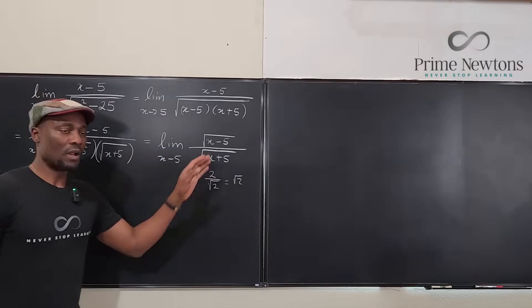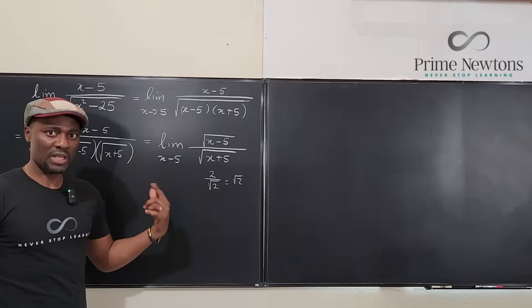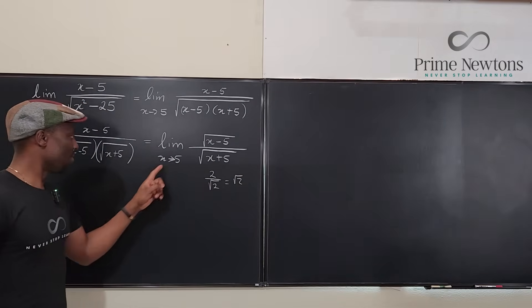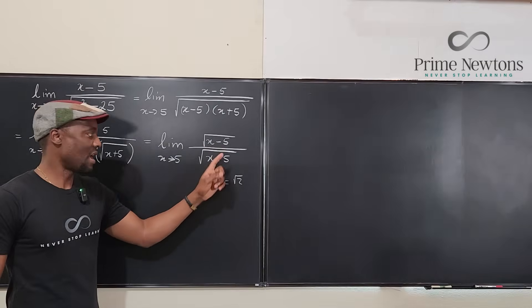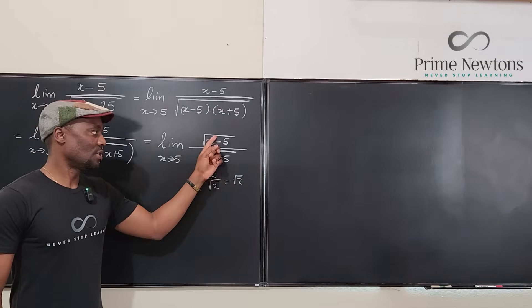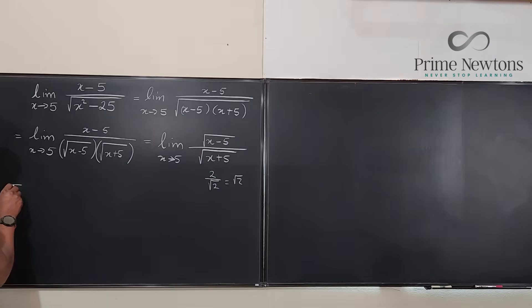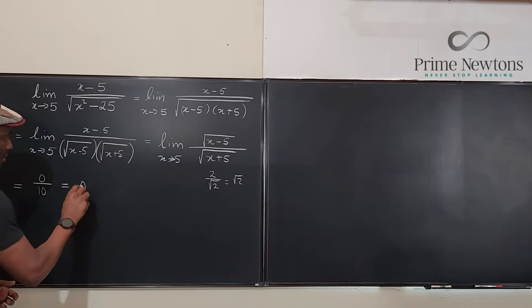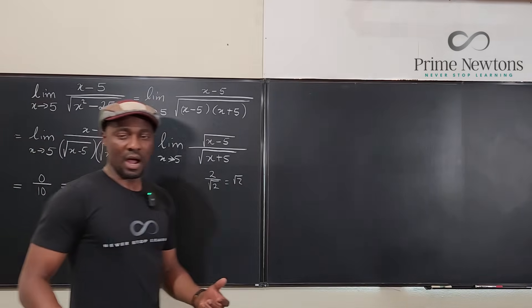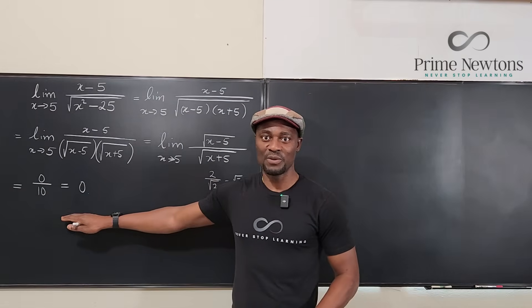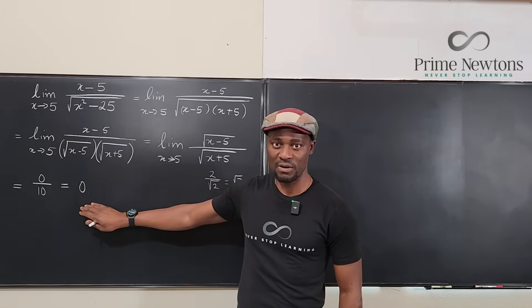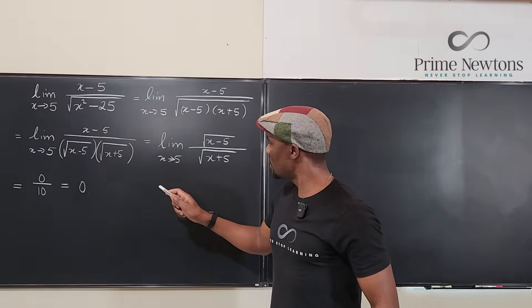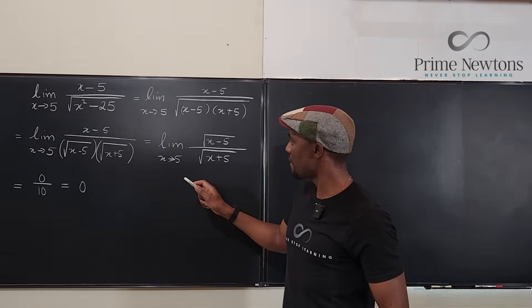The limit becomes the square root of x minus 5 over the square root of x plus 5. Now can we plug in 5? If you plug in 5, you get 5 minus 5 which is 0, and 5 plus 5 which is 10. So 0 over the square root of 10 gives you 0. This is one side of the argument — the answer to this limit is 0.